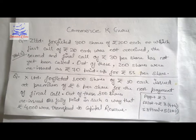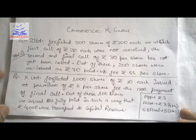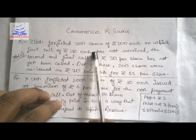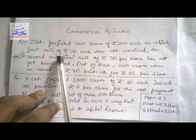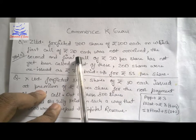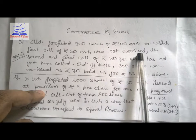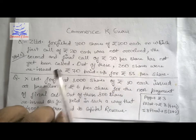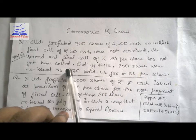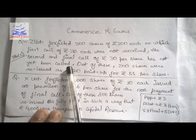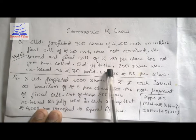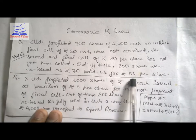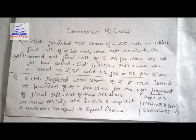Now let's go straight to the question. Z Limited forfeited 300 shares of ₹100 each. The first call of ₹20 per share was not received. The second and final call of ₹30 per share has not yet been called. Out of these shares, 200 were reissued as ₹70 paid-up for ₹55 per share. Now let's look at the solution.